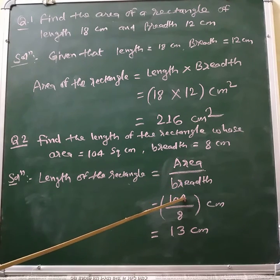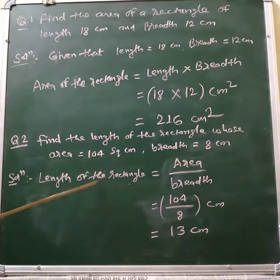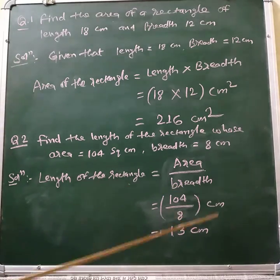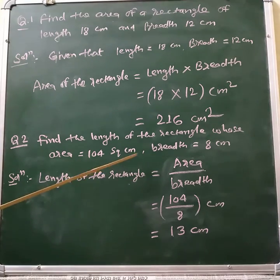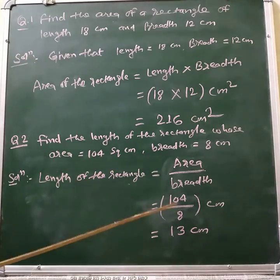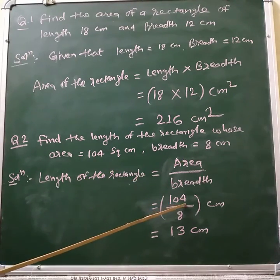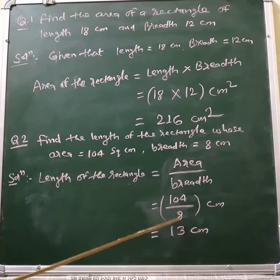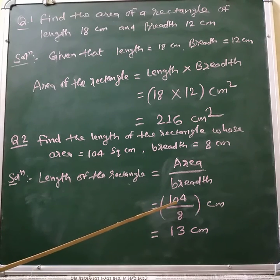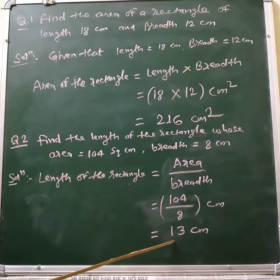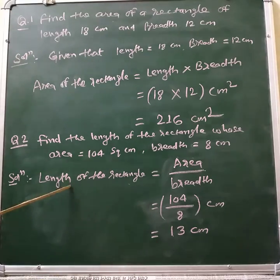Length is measured in centimeter because area is in square centimeter, and square centimeter divided by centimeter is equal to centimeter. Area is 104 and breadth is 8, so length equals 104 divided by 8. If we divide 104 by 8 we get 13 as the quotient and 0 as the remainder.